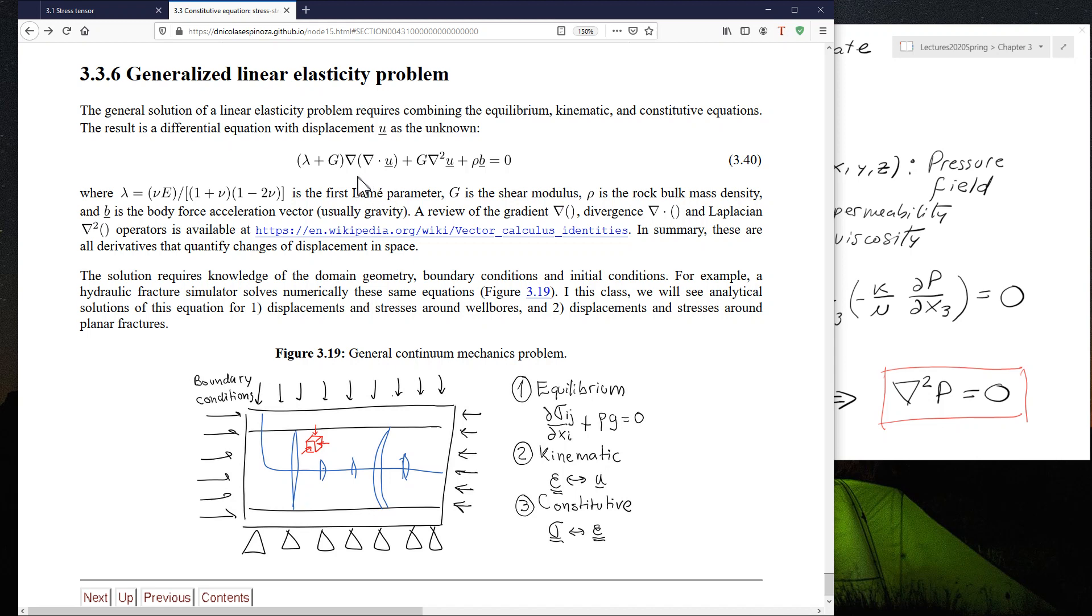This is called the Navier's Equation of Elasticity, in which the unknown, or the value to solve, is the displacement U. And notice that this is a vector. In this equation, we also see that there are some parameters. These are lambda and G. These are the Lame parameters, which depend on Young modulus and Poisson ratio. And we also see that we have density of the material and the vector of acceleration.